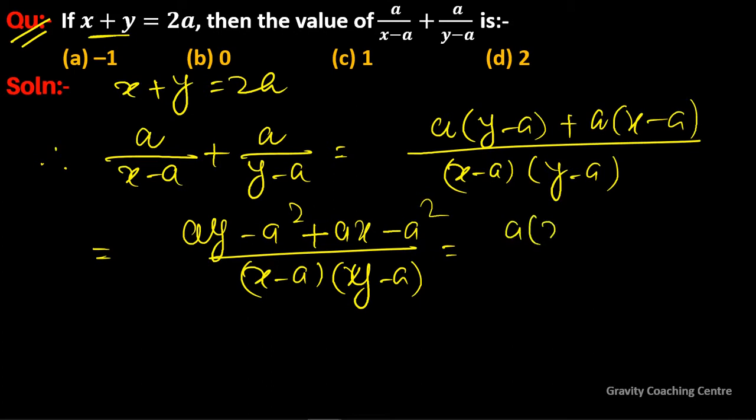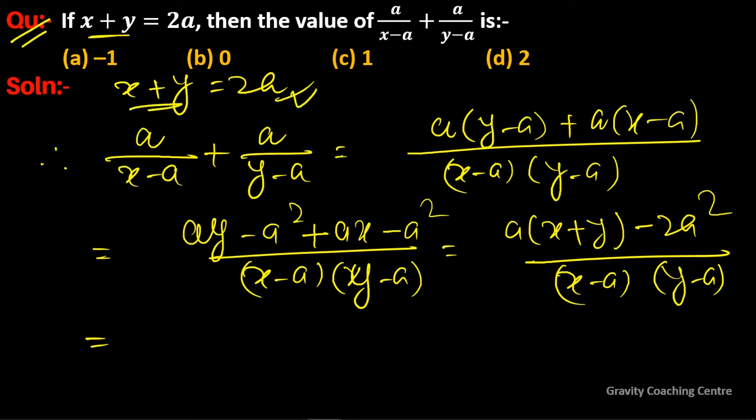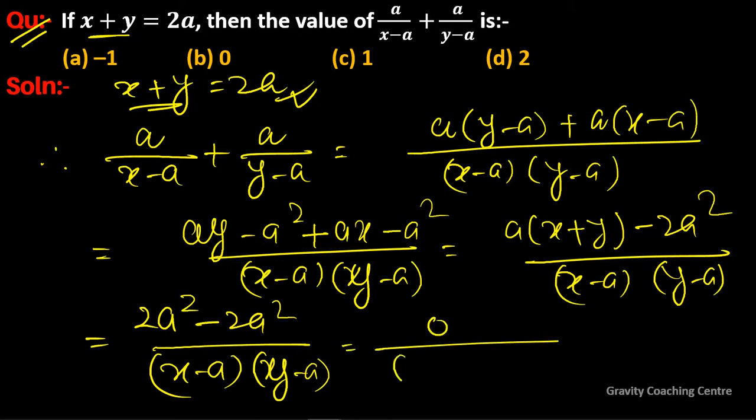Now we take a as common: a times x plus y minus 2a. The value of x plus y is equal to 2a, so we put it here: 2a squared minus 2a squared upon x minus a times y minus a. So zero upon anything equals zero. Option b is the correct answer.